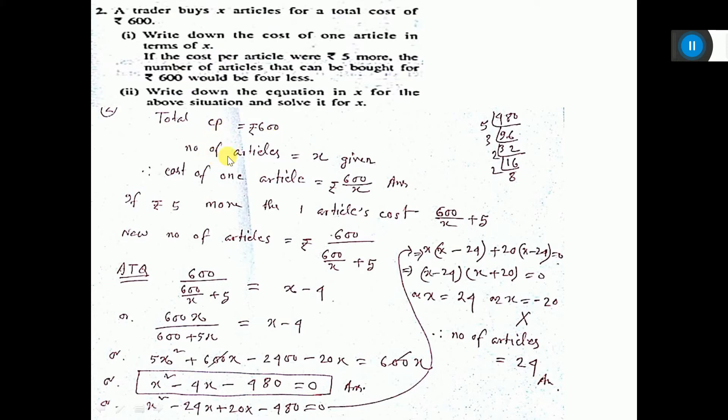Number of articles is given as x, so cost of one article is total CP divided by x, that is number of articles. So 600 by x, this is the answer. If the cost per article were 5 rupees more, that means you add 5 with this, so this is the new cost of one article.